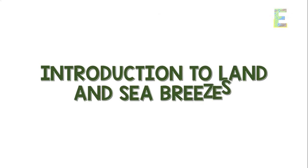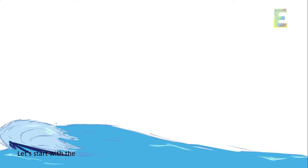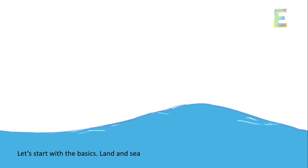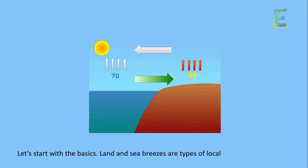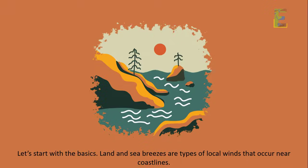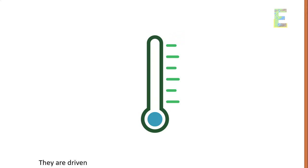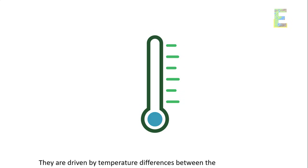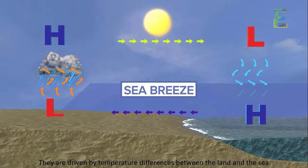Introduction to land and sea breezes. Let's start with the basics. Land and sea breezes are types of local winds that occur near coastlines. They are driven by temperature differences between the land and the sea.